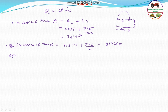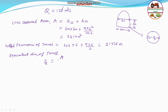From the wetted perimeter we can calculate the equivalent diameter of the tunnel. Since this is a non-circular cross section, we treat it as an equivalent circular section to calculate the head loss. The equivalent diameter D_e equals 4 × (wetted area / wetted perimeter) = 4 × 32.14 / 21.425, which gives an equivalent diameter of 6.005 meters.